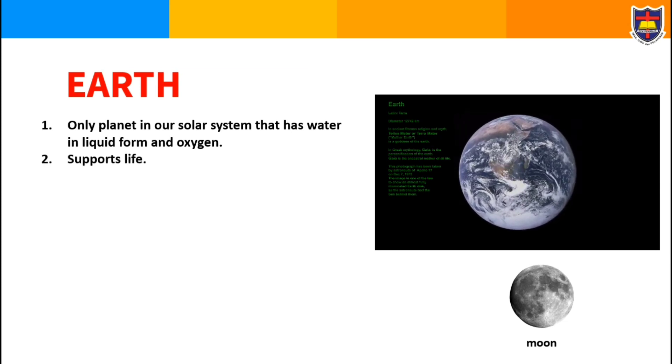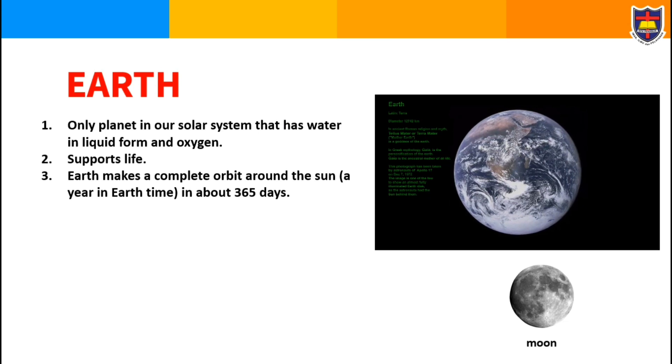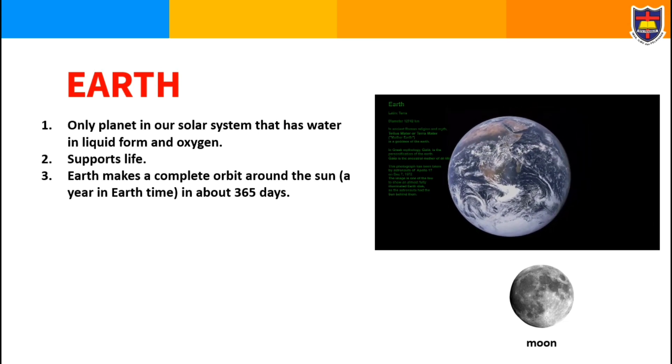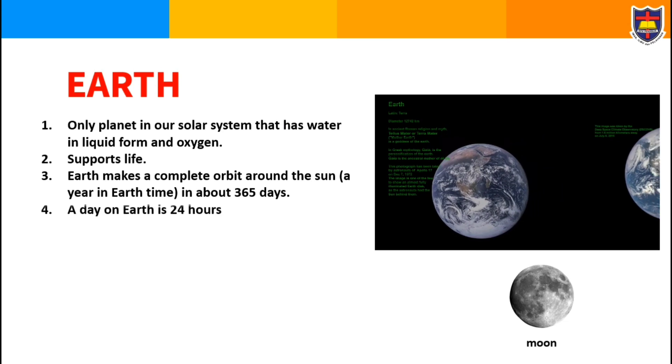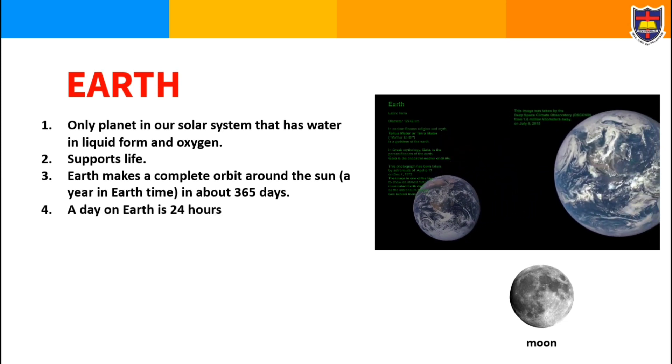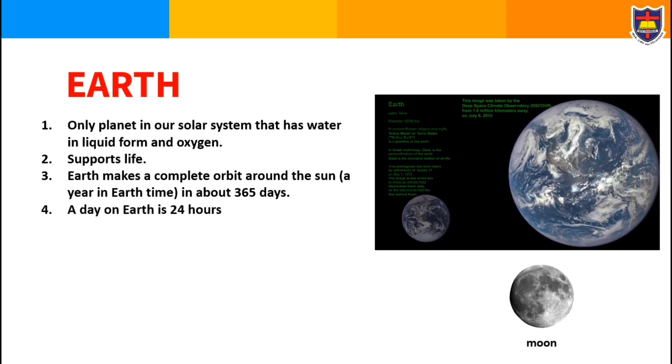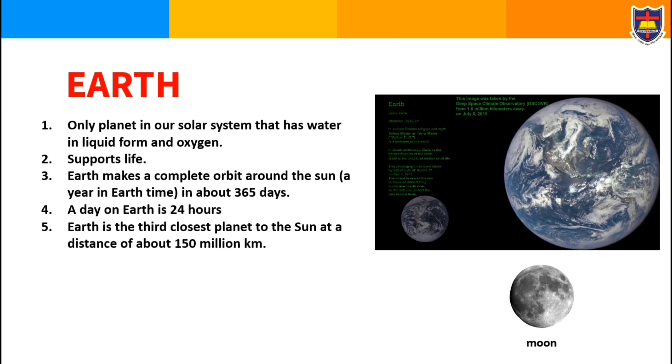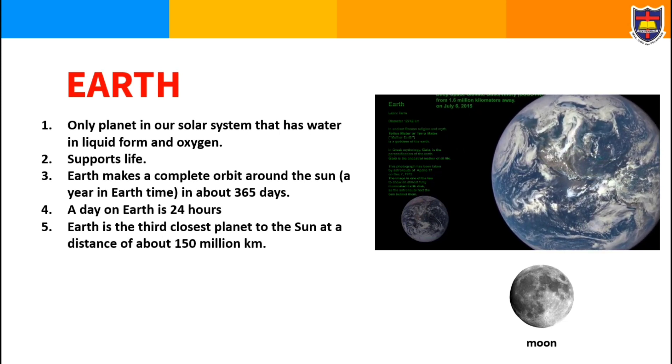Earth makes a complete orbit around the Sun in about 365 days. A day on Earth is 24 hours. Earth is the third closest planet to the Sun at a distance of about 150 million kilometers.